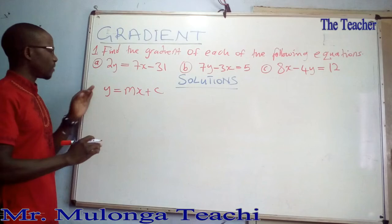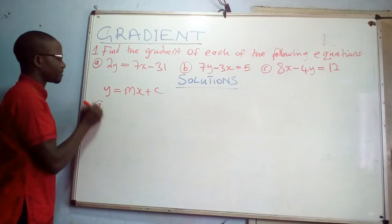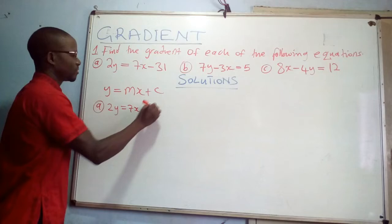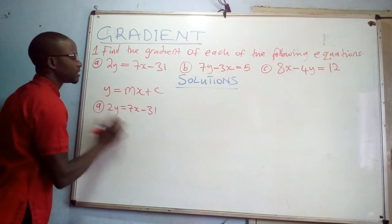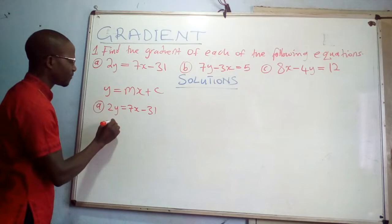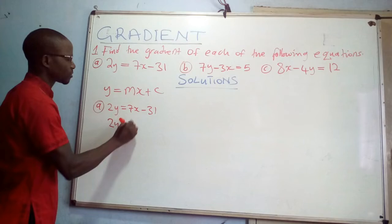Starting with equation A: 2y = 7x - 31. You are finding the gradient, so write this equation in the form y = mx + c, meaning make y the subject of the formula. We have 2y = 7x - 31, so divide throughout by 2.